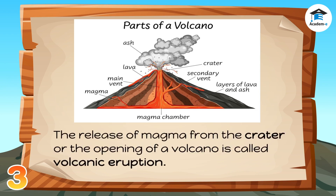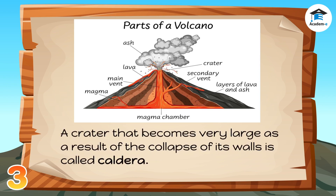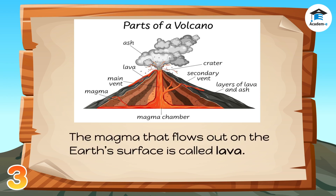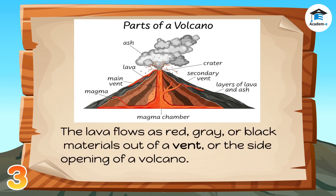The release of magma from the crater or the opening of a volcano is called volcanic eruption. A crater that becomes very large as a result of the collapse of its walls is called a caldera. The magma that flows out on the Earth's surface is called lava. The lava flows as red, gray, or black materials out of a vent, or the side opening of a volcano.